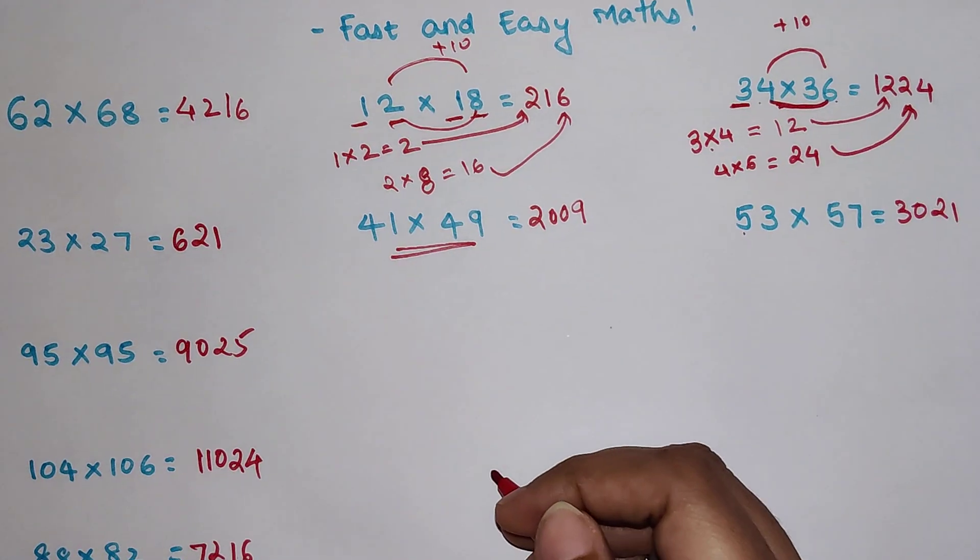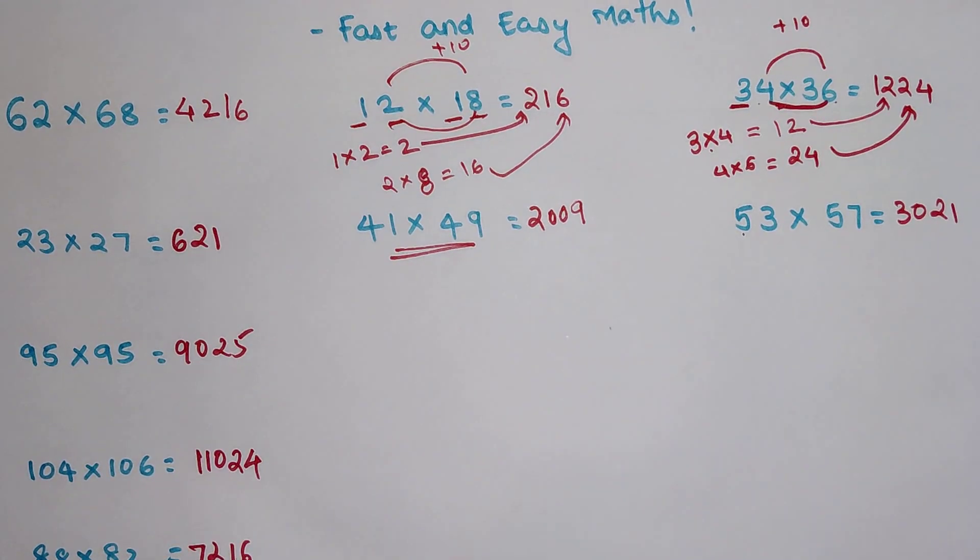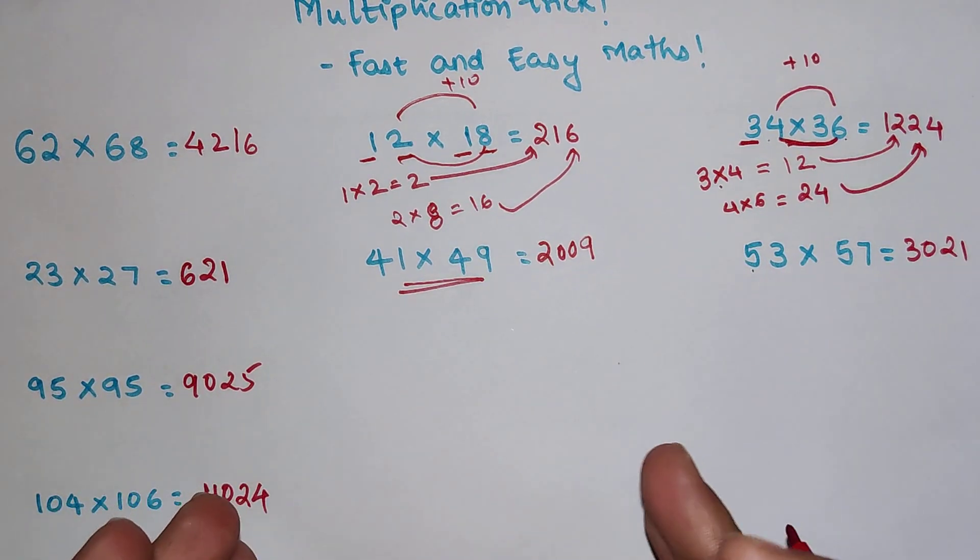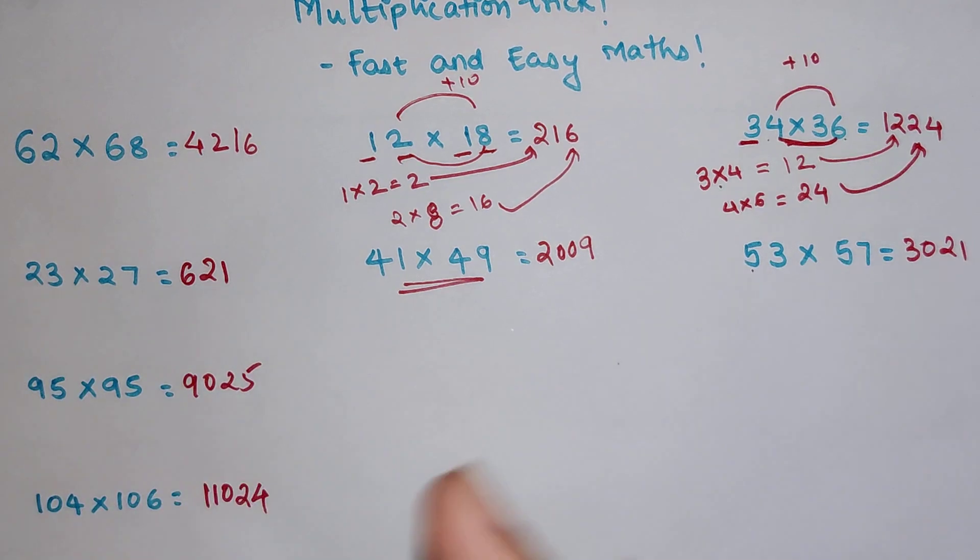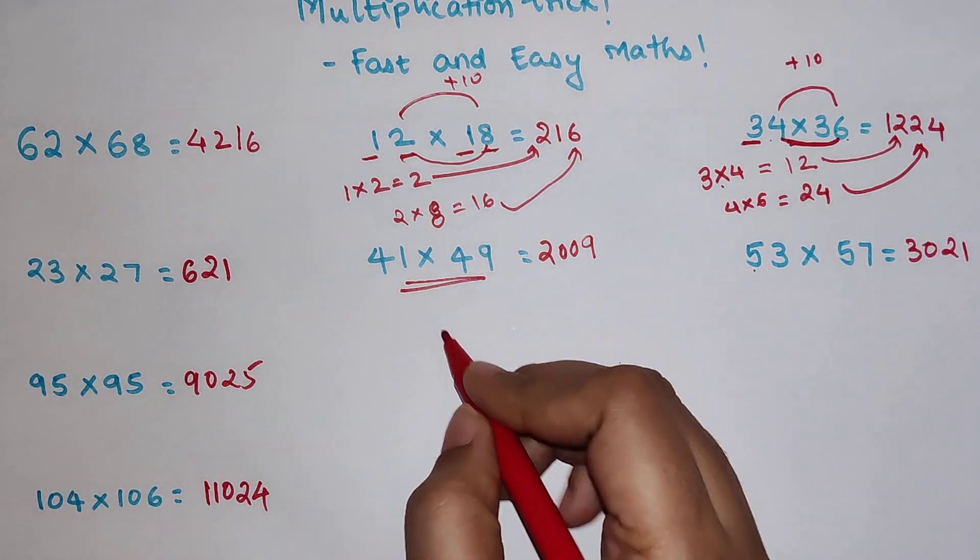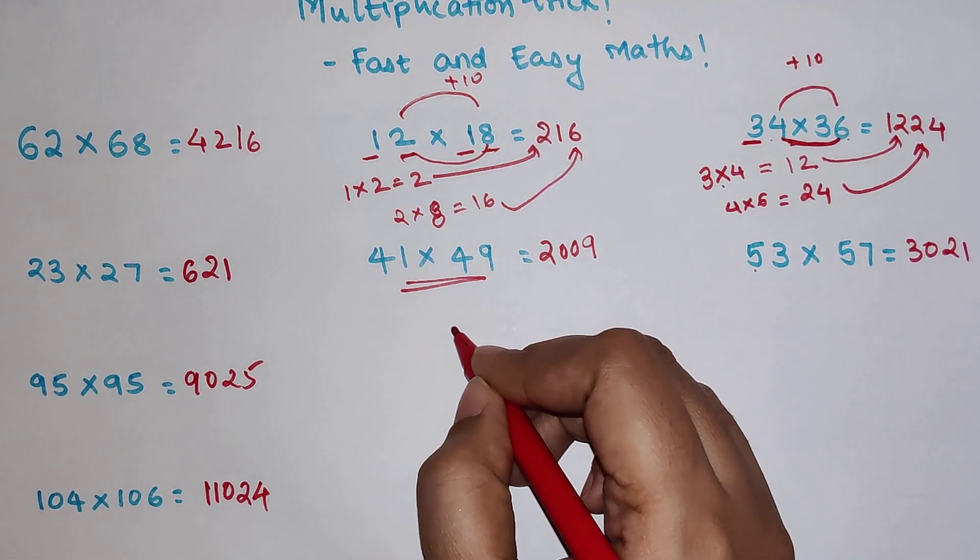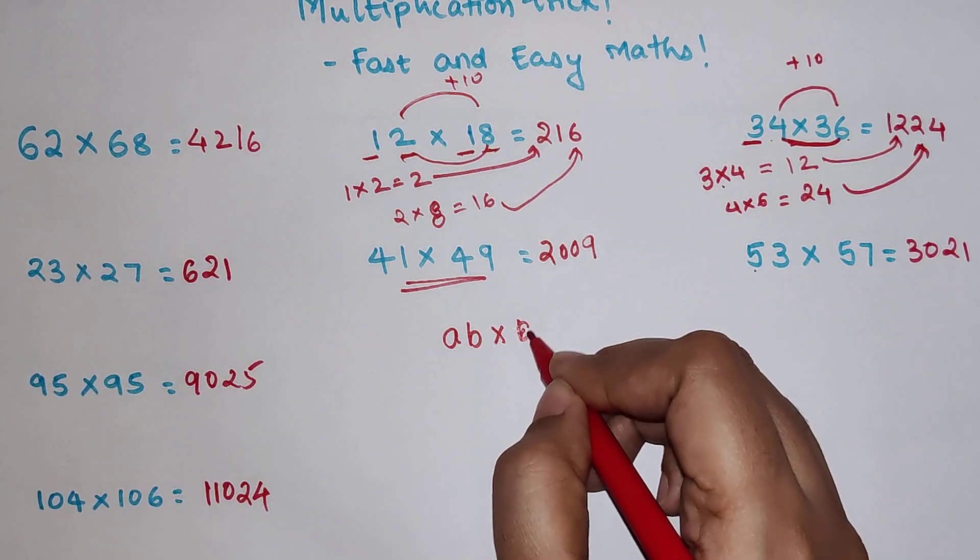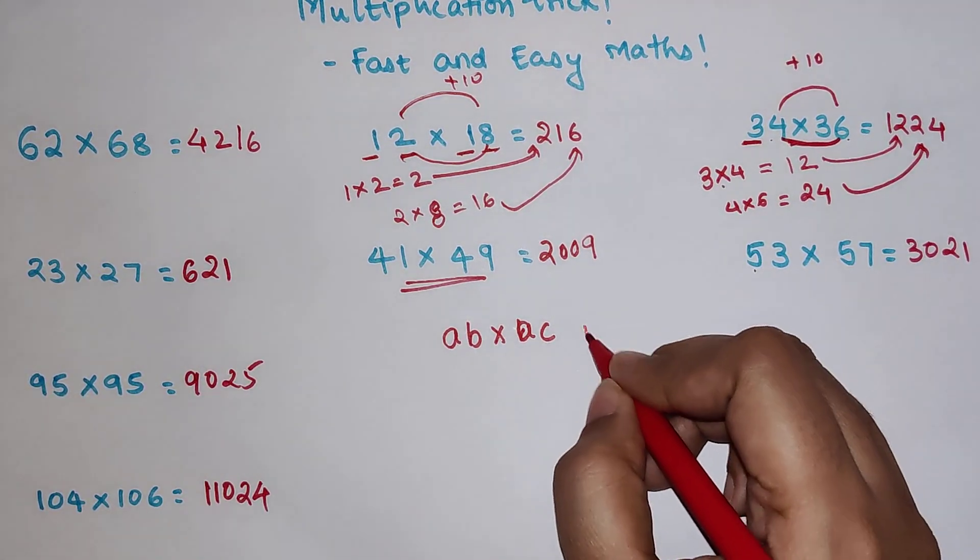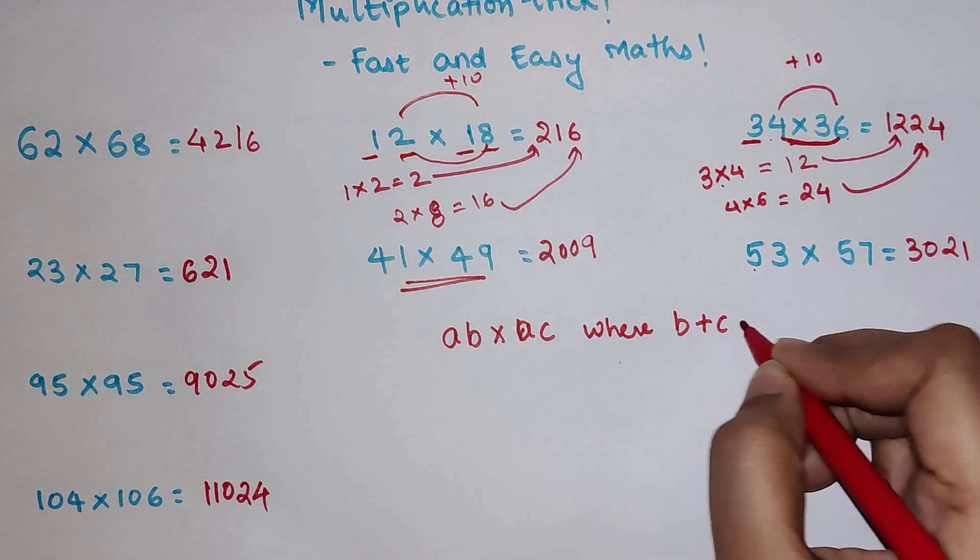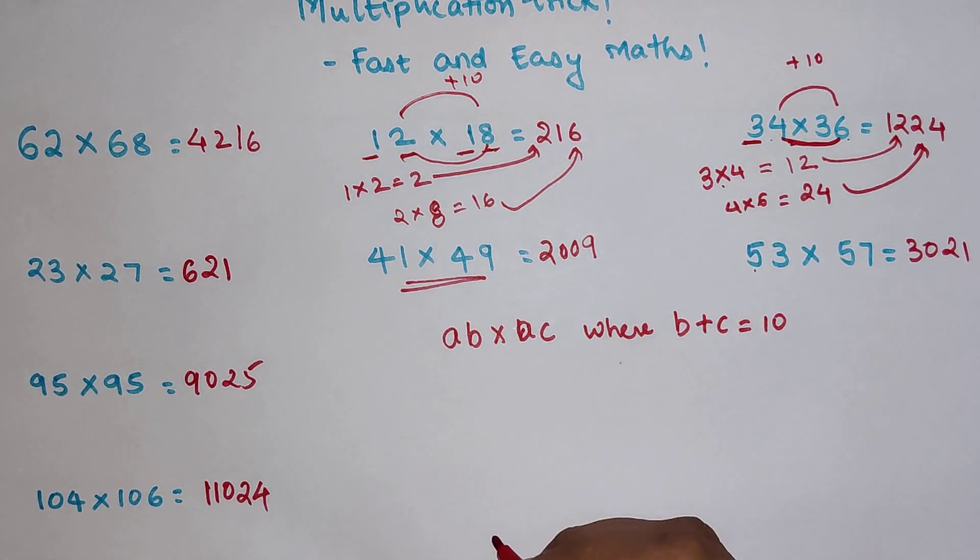So now coming to the part. See lot of students like to know the trick and they are fine with it. But there are lot of other students who want to understand how is this trick working and why it doesn't work in other scenarios. So for those I am going to explain using the help of algebra. So let's take A into B and sorry A into C. This is what we have where we are making sure that B plus C is equals to 10.